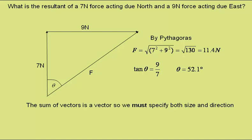So once again, the sum of vectors is a vector, so we must specify both size and direction. In the A-level course, examples will consist of a maximum of two vectors acting at right angles to each other.